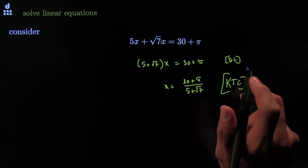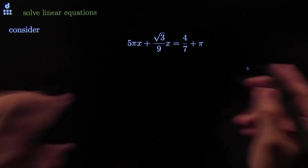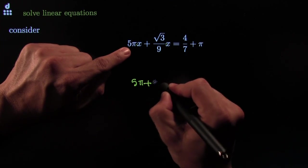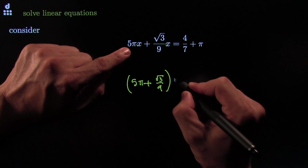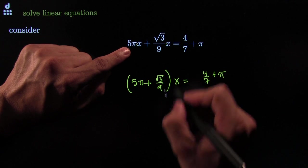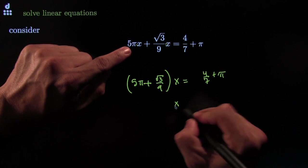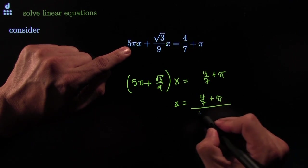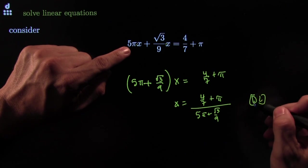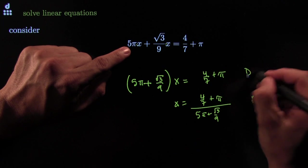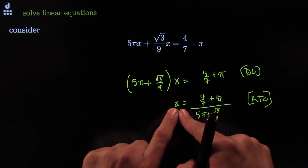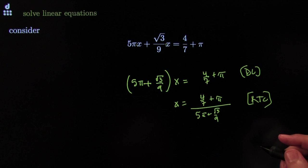Bunch of x's, no x's on the other side — gather them and kill the coefficient. You could also have fractions; no problem, don't let fractions scare you. You can factor them out just the same way. The distributive law is not discriminatory — if it looks like x was distributed, you can undistribute it, and then you can kill the coefficient. X is all by itself on one side, and there are no x's on the other side.